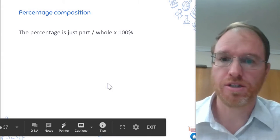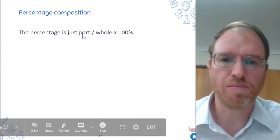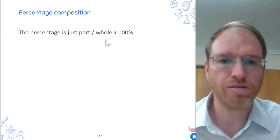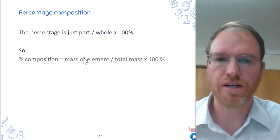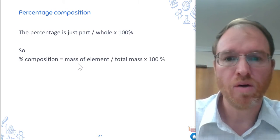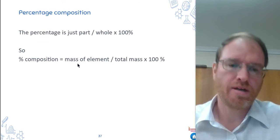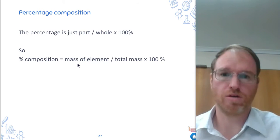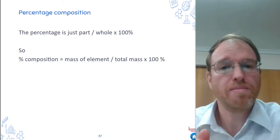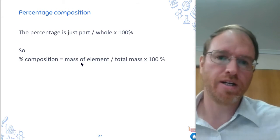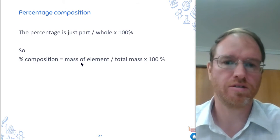So let's start with percentage composition. Remember percentage is just the part divided by the whole times 100. So for this case, we're interested in the mass of one element in the compound as a fraction of the whole mass of the compound. So we just work out the mass of that element, divide it by the total mass of the whole thing times it by 100.